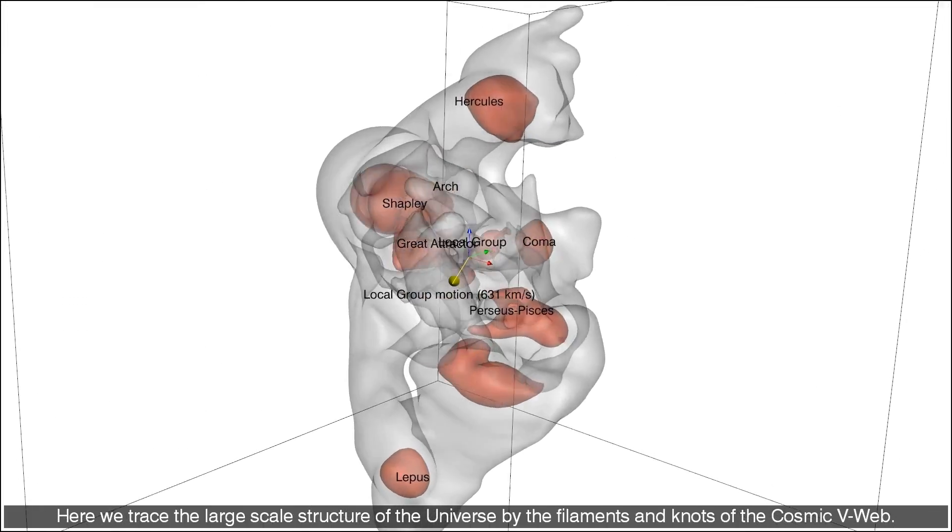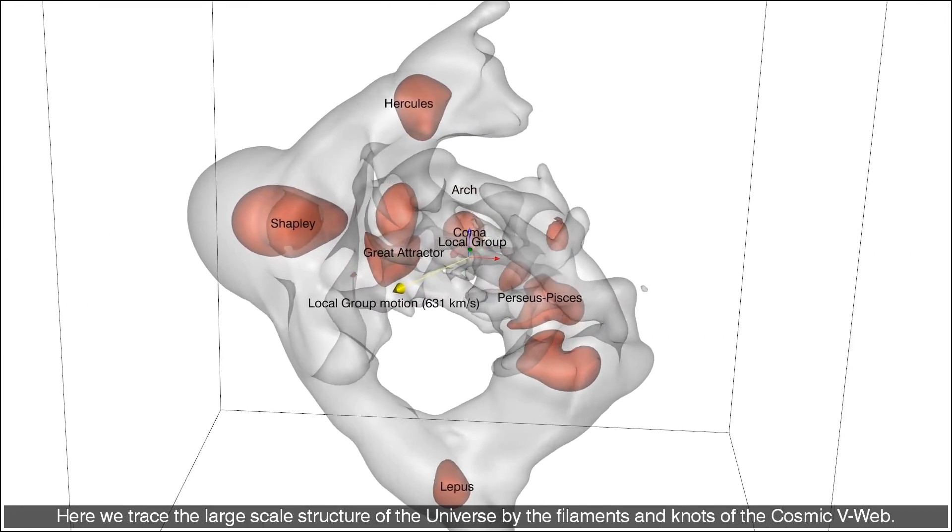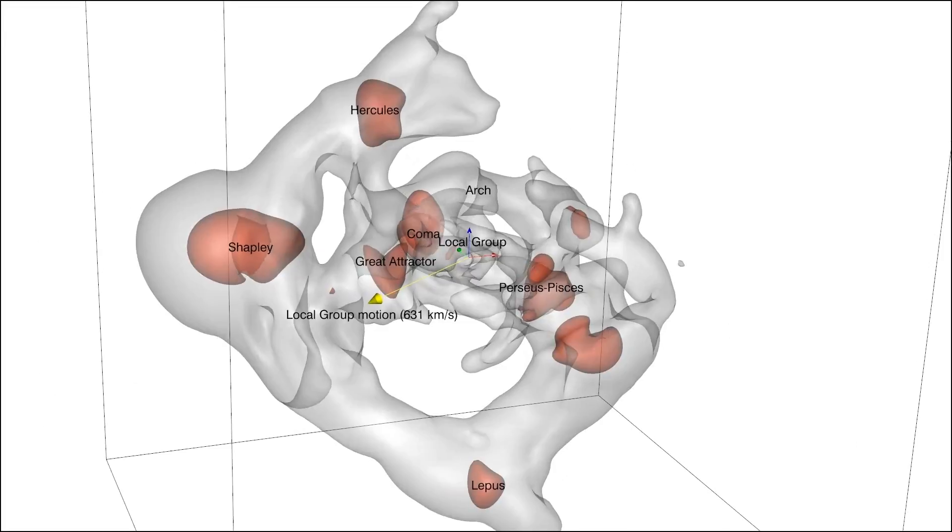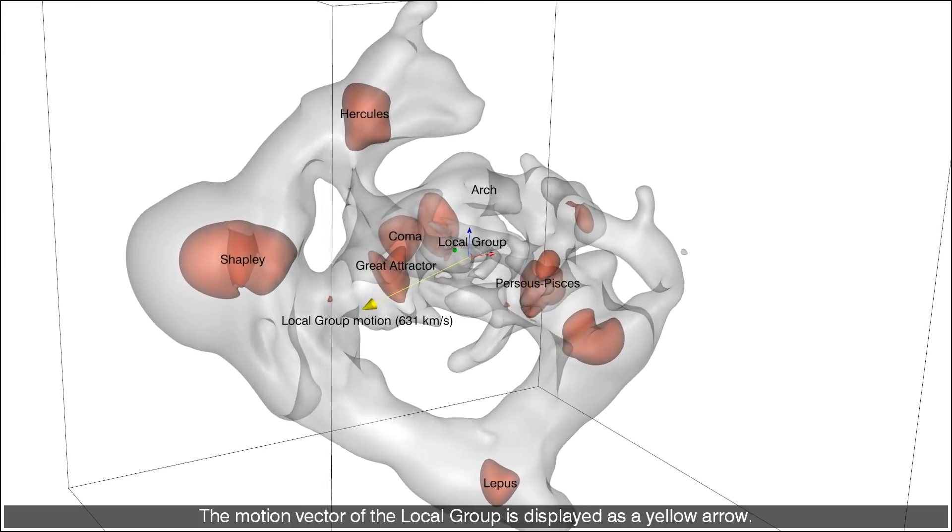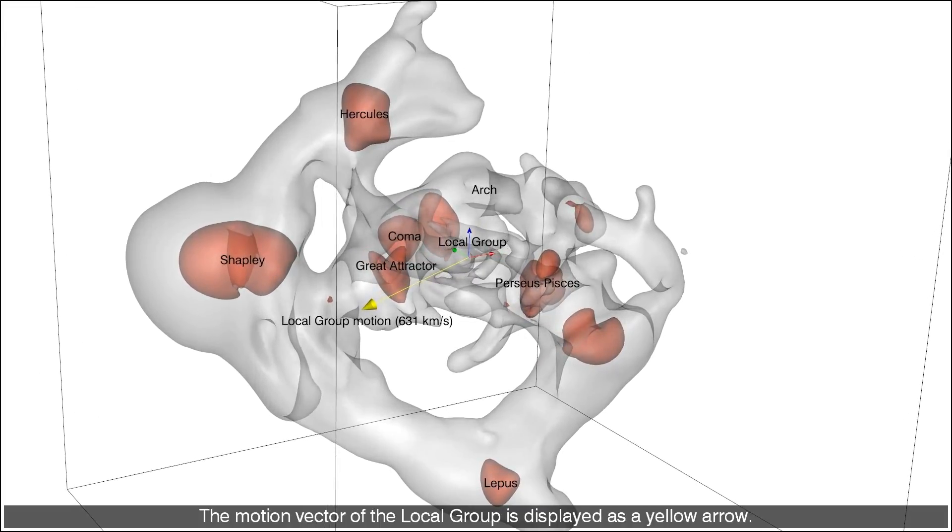Here we trace the large scale structure of the universe by the filaments and knots of the cosmic web. The motion vector of the local group is displayed as a yellow arrow.